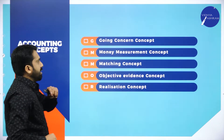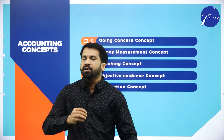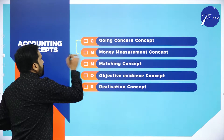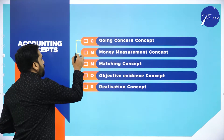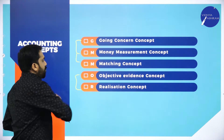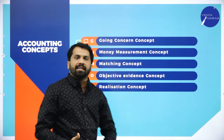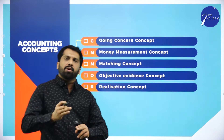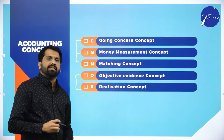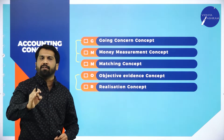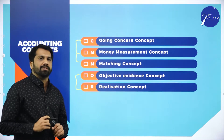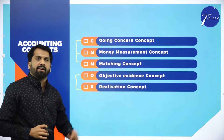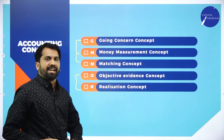These are the remaining five concepts we are going to discuss in today's session. As I told you how to remember — G for going concerned, M for matching concept, M for money measurement concept, O for objective evidence, and the last one R for realization concept. We will go with each and every one individually.